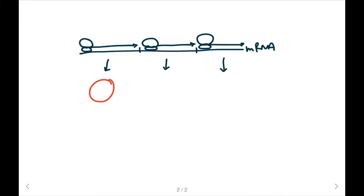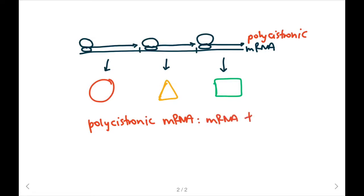And are going to translate each gene to produce proteins with similar functions. So we'll have our first protein, we'll have protein number two, and then protein number three. And because this one mRNA codes for multiple proteins, we call it polycistronic.